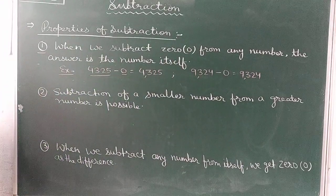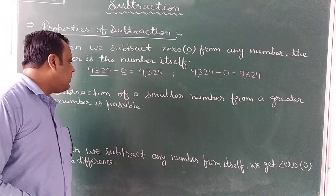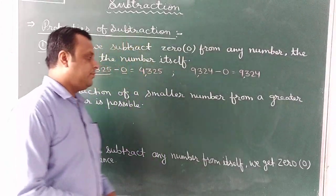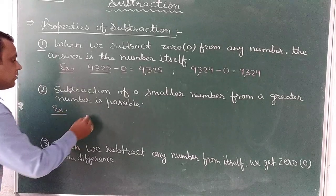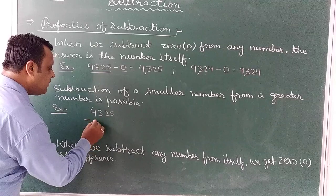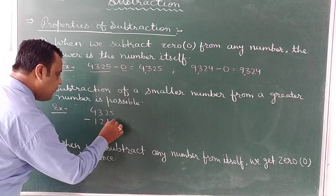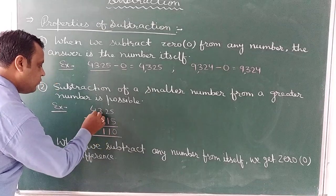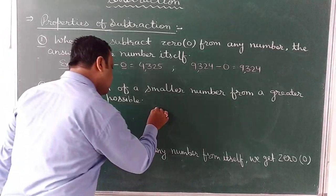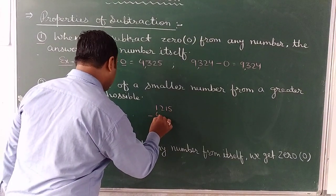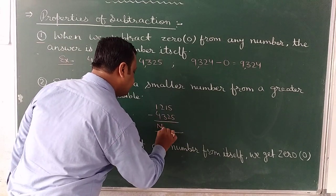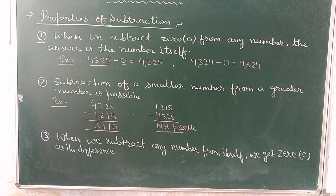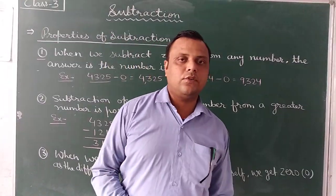Property 2: subtraction of a smaller number from a greater number is possible, but we cannot subtract a greater number from a smaller number. For example, 4,325 minus 1,250 is possible and equals 3,075. But 1,250 minus 4,325 is not possible. So we must remember that only a smaller number can be subtracted from a greater number.